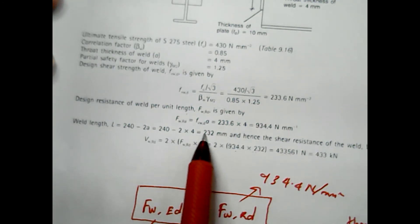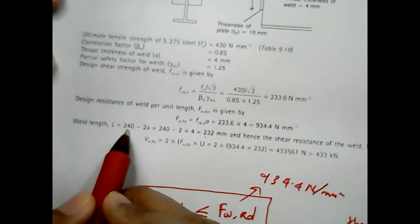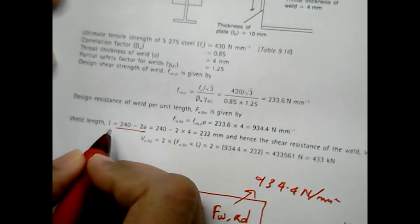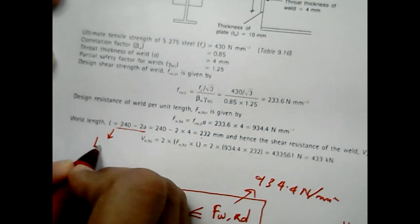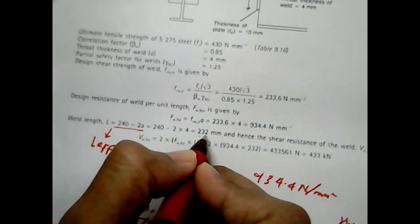The weld length is 240 minus 28, which is the effective length of the weld L effective. So you get 232mm.